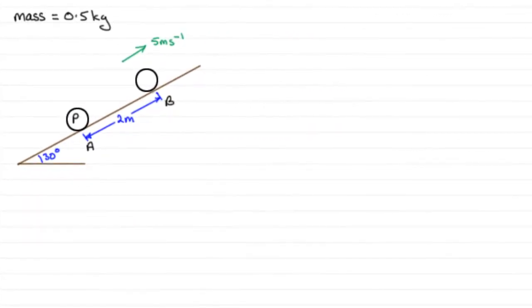Okay, so what I've done is quickly draw a sketch of what we're given. We're told that we've got this particle P of mass 0.5 kilograms and it's projected from this point A up the line of greatest slope AB of a fixed plane.